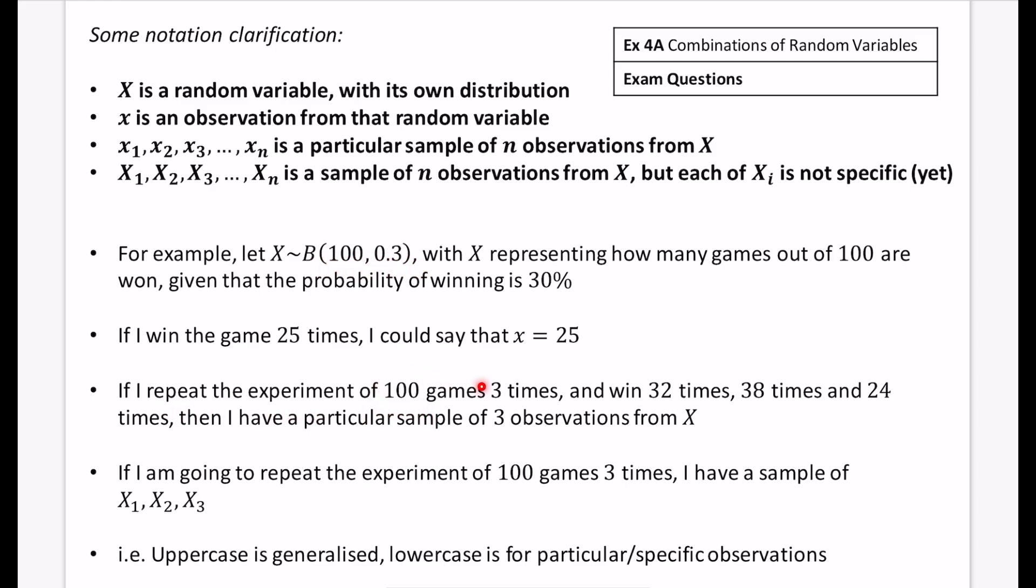If I repeat the experiment of 100 games three times, and I win 32 times, 38 times and 24 times, then I have a particular sample of three observations from X. So it's kind of lowercase, I could call this x1, x2 and x3 as lowercase.